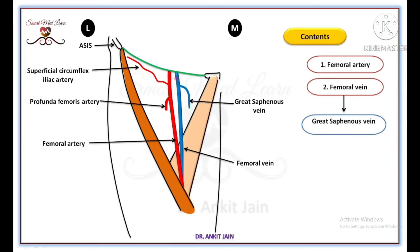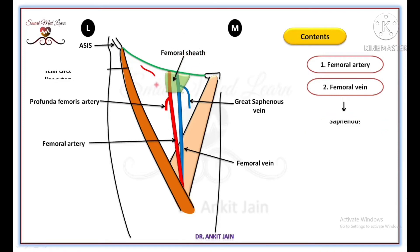The upper 3 to 4 cm of the femoral vessels are enclosed by a funnel-shaped fascial sheet known as the femoral sheath.